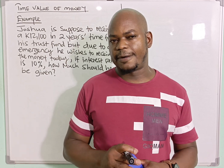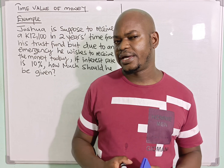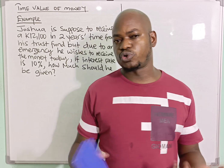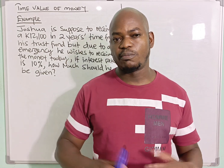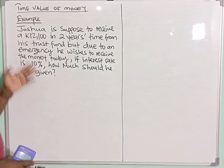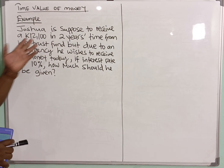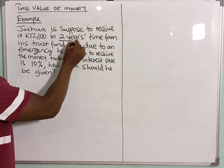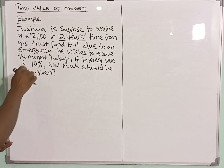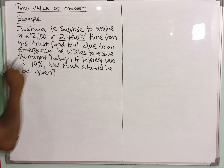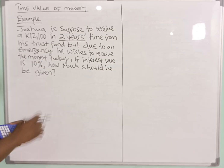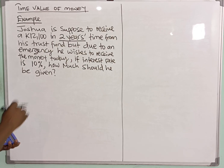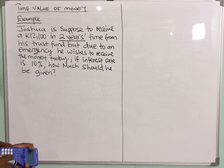Now let's get into an illustration by looking at an example which I'm going to read for you on the board, and then we'll solve it to make this explanation more clear. Joshua is supposed to receive $2,100 in two years' time — not today — from his trust fund, but due to an emergency he wishes to receive the money today. If the interest rate is 10%, how much should he be given?